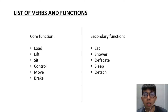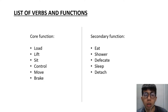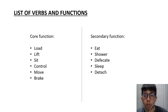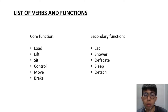The next part is the list of work and functions. The core functions are: lifting functions to lift the patient from the bed to the seat, a seating function, control to control the motion of the device, movement, and the braking system. The secondary functions are eating features, shower features, defecation features, sleeping features, and whether the device is detachable.